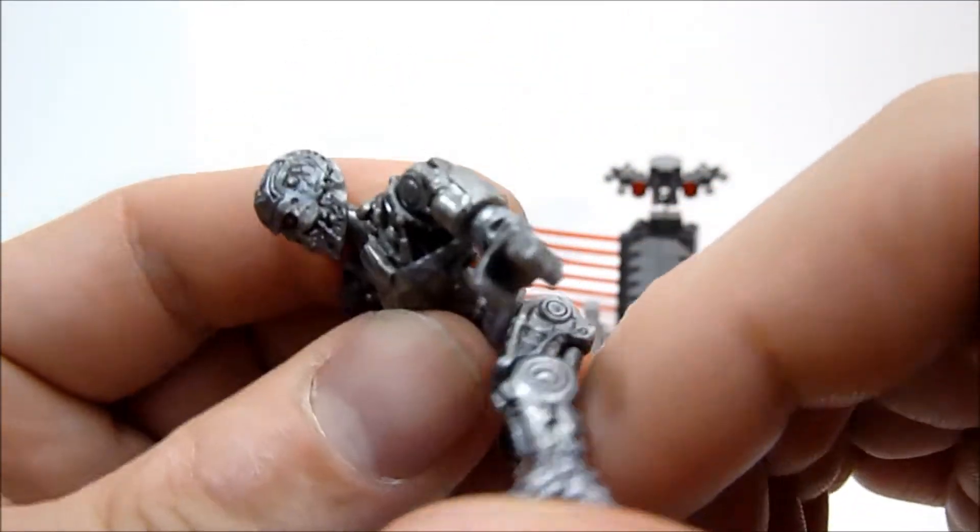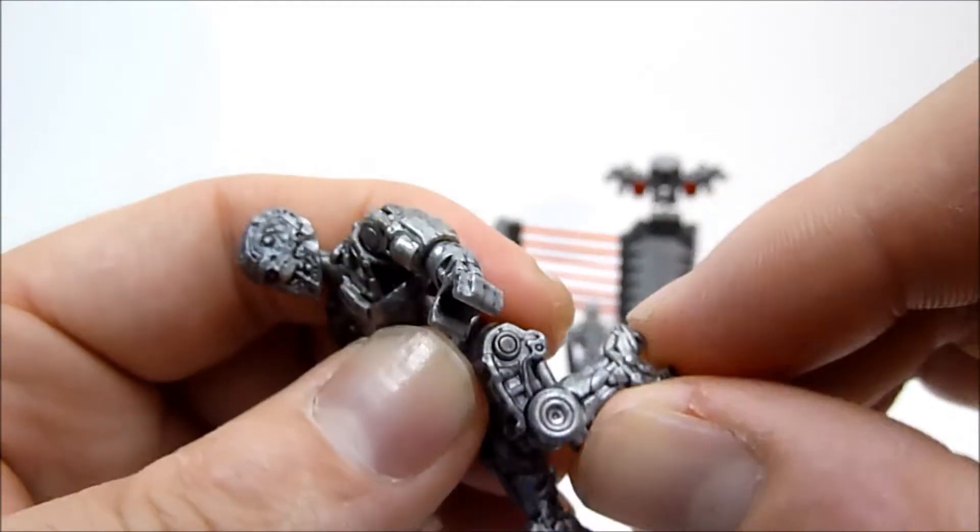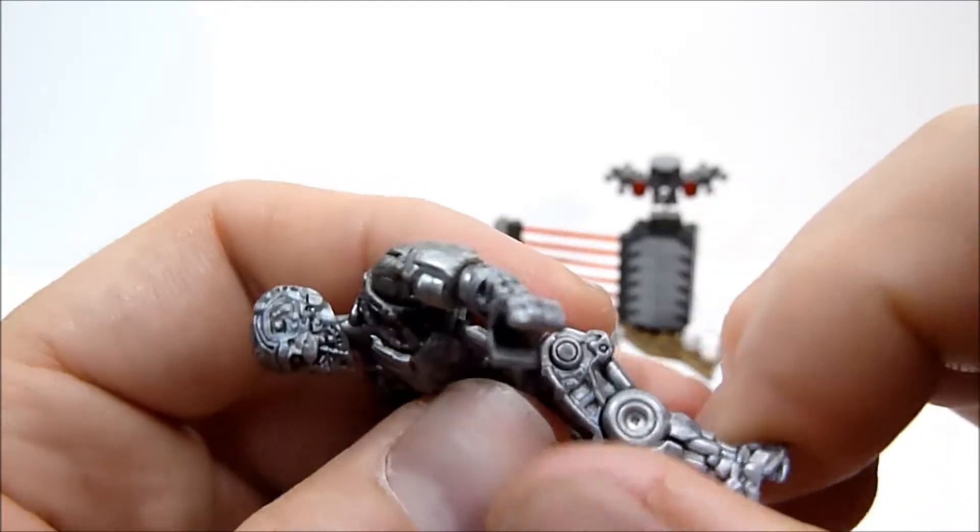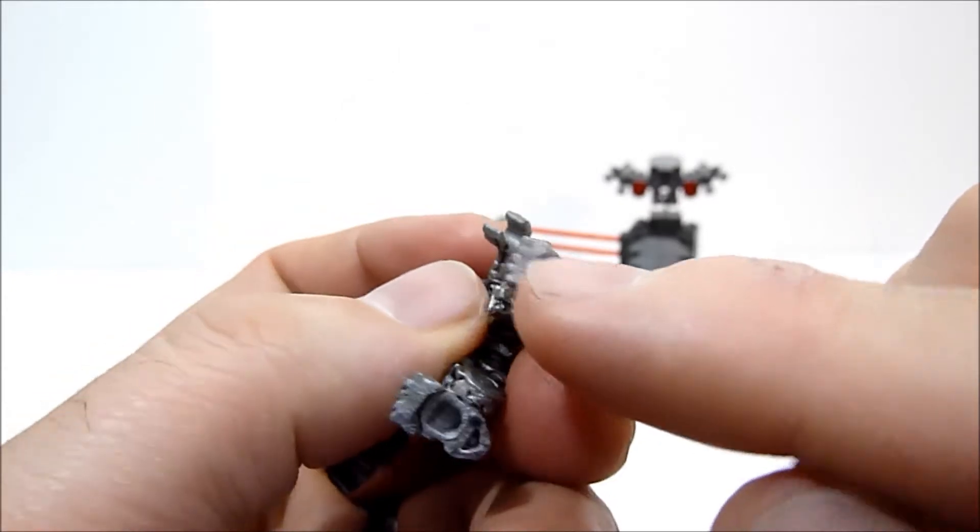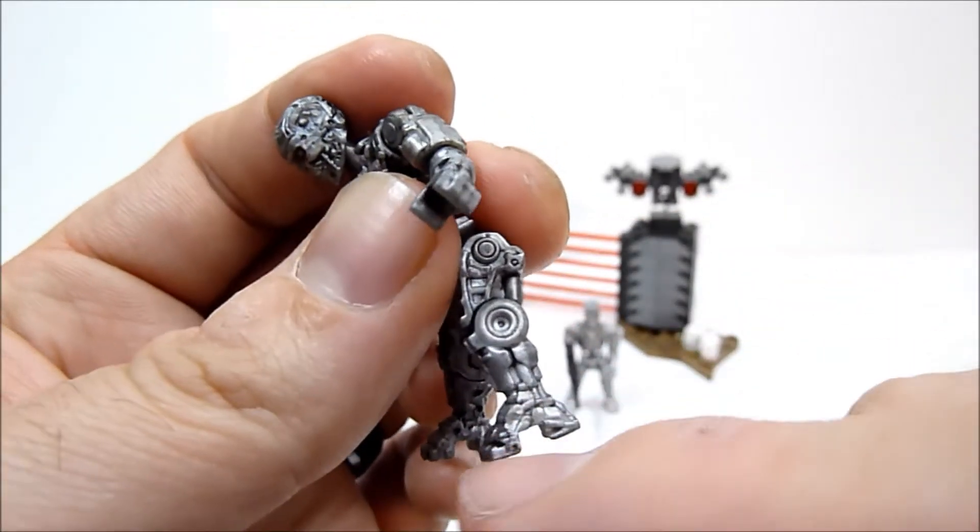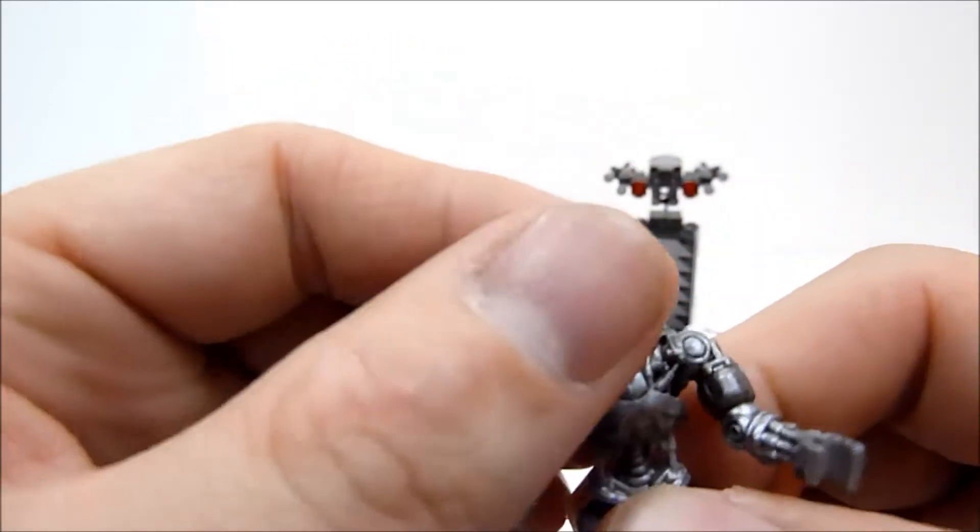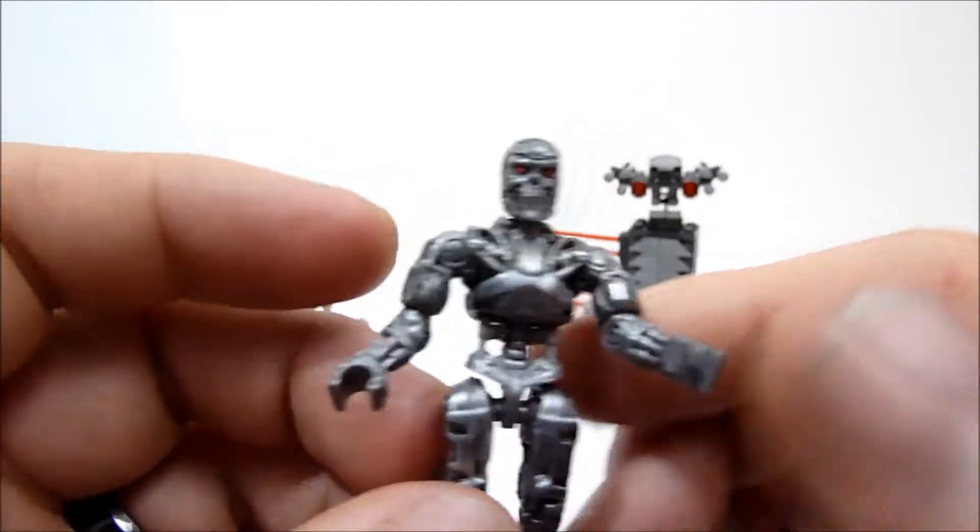Here we go, just like so. Got the ball jointed hips going on and the nice knee bend as well. They even used the cutout for the stud to give the feet that kind of distinctive arch that they had. So really really nice job. You get one of these in the set.